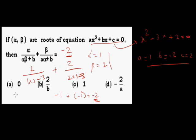So the value of the expression is -2. Let's check the options: 0 cannot be the answer. 2/b = 2/(-3), which is not -2. 1 is not the solution. But -2/a = -2/1 = -2 — yes, that matches. In a few simple seconds we are able to solve this kind of problem.